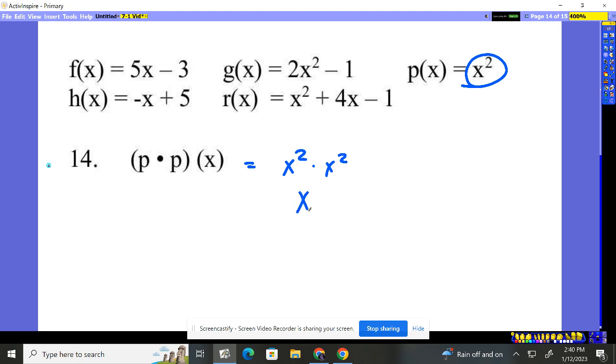x squared times x squared is x to the fourth, because again, x squared is x times x. This is x times x, so you have x to the fourth.